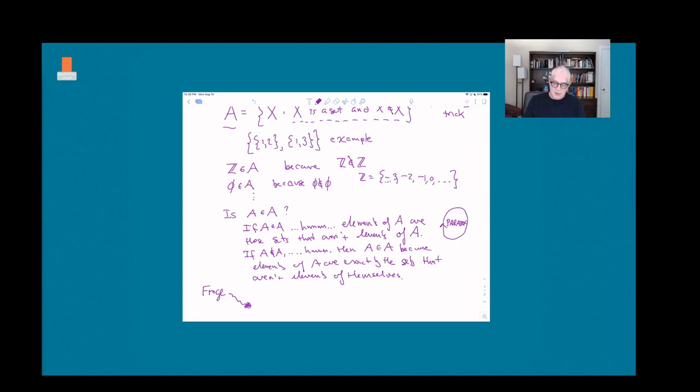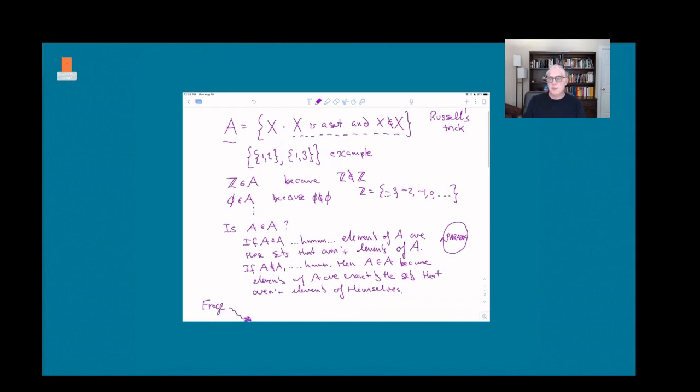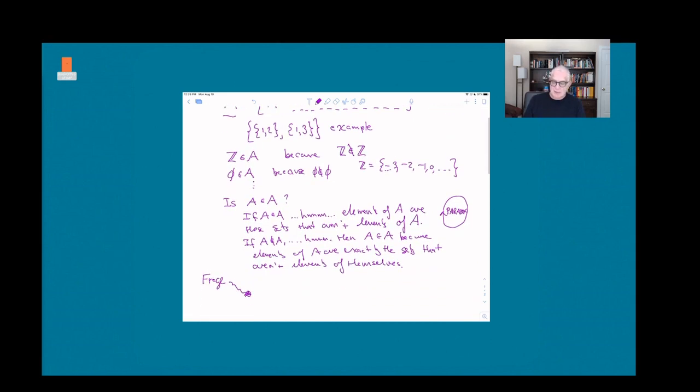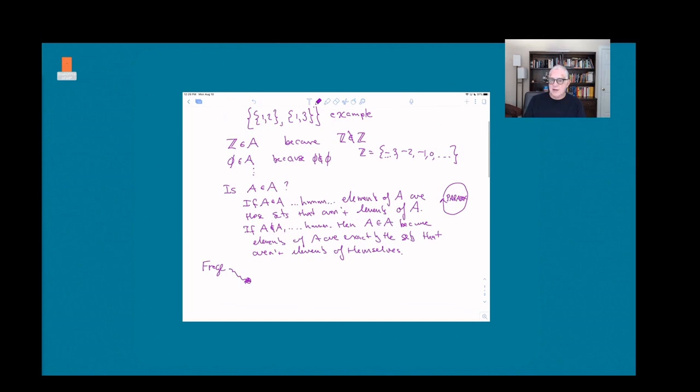Russell, however, went on and looked at this much more closely. And after a number of years, he and some other people figured out a way to kind of fix this problem. They developed what are called the Zermelo-Fraenkel axioms of set theory.